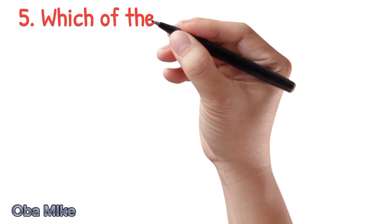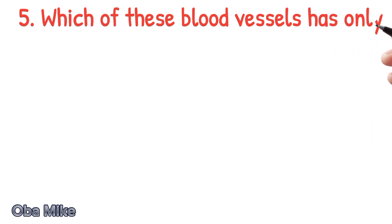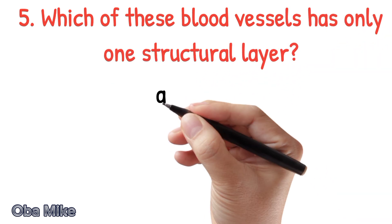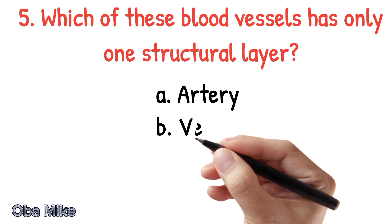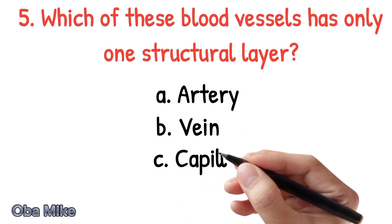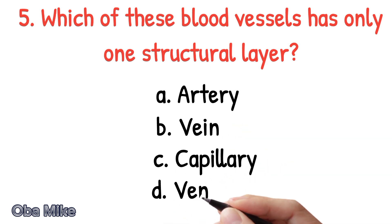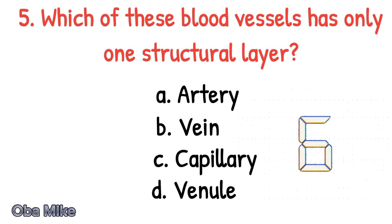Number 5. Which of these blood vessels has only one structural layer? A. Artery. B. Vein. C. Capillary. D. Venial. The correct answer is C. Capillary.